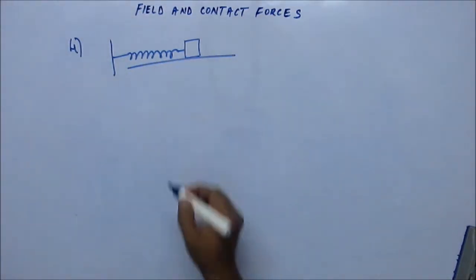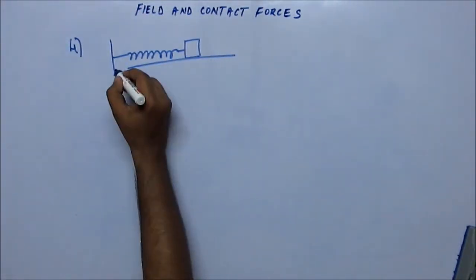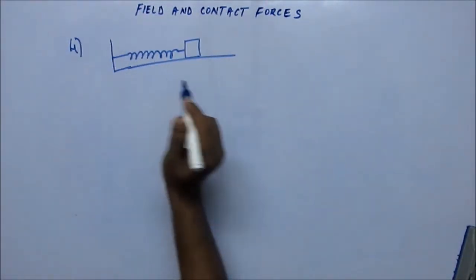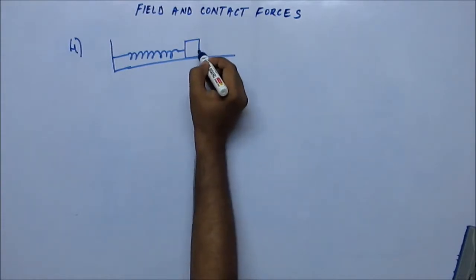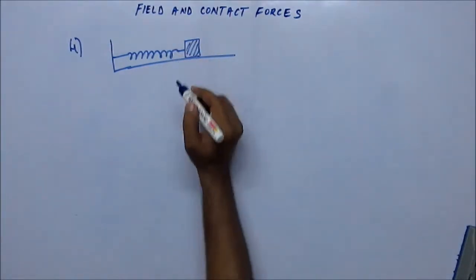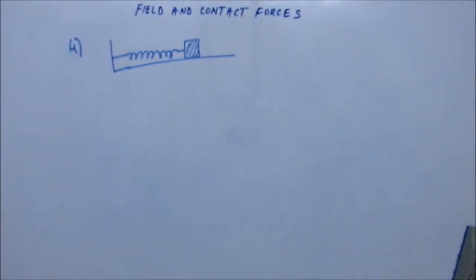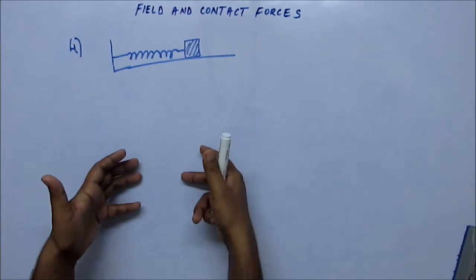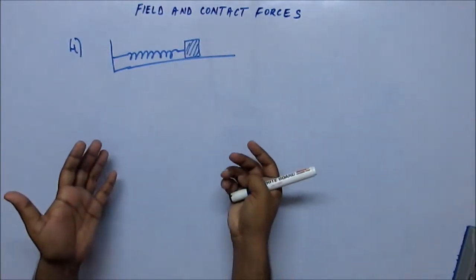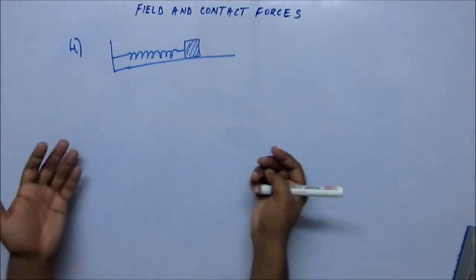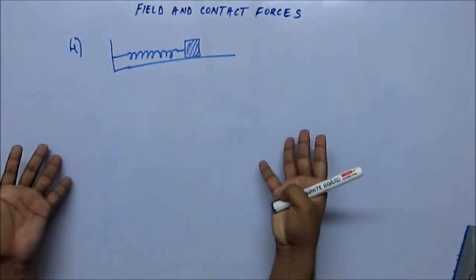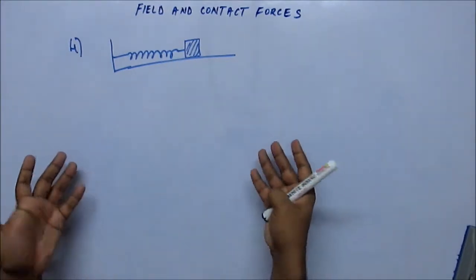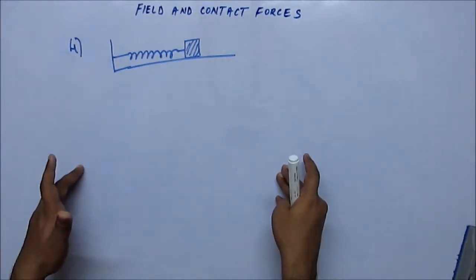Suppose there is a spring-block system like this. This is a block and this is a spring. Now the spring is in an unstressed, relaxed position — there is no force acting on it, so there is no tension or stress developed in the spring. The block is just attached to the spring and it is kept as it is.